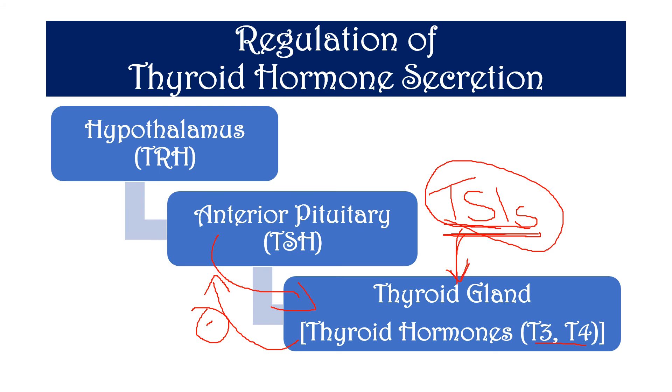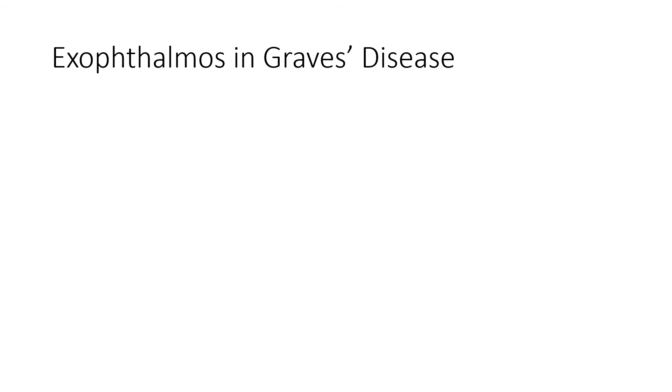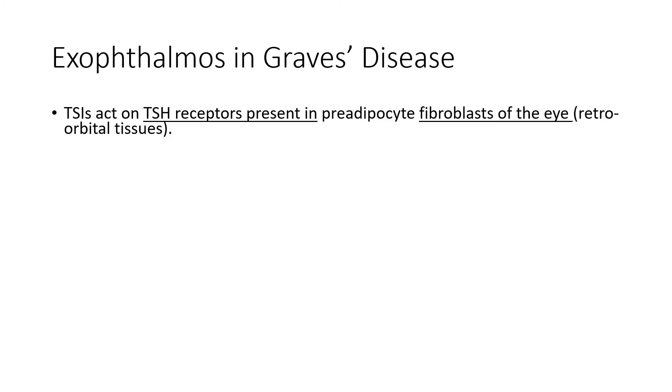These TSIs also act for a longer duration than normal TSH, leading to more increase in the thyroid hormone levels. The TSH receptors are present not only in the thyroid gland but also in a few other tissues like the fibroblasts of the eye. As they act for a longer duration and are not inhibited by the negative feedback mechanism, they exert their effects on many other tissues that have TSH receptors, including the pre-adipocyte fibroblasts of the eye, which are in the retroorbital tissues.